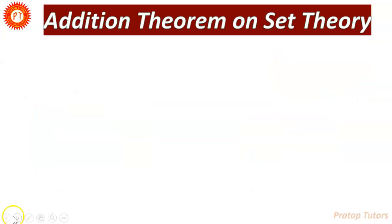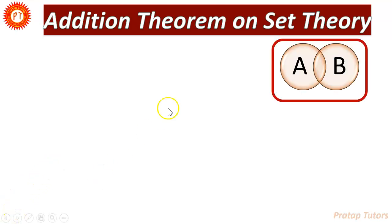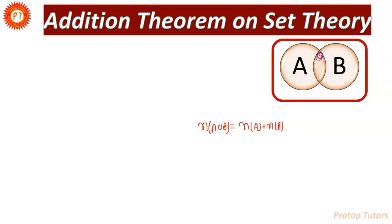Suppose that you have two non-empty sets A and B and you want to find the number of elements in A union B. This is equal to n(A) plus n(B), but here some parts are added twice. So we can simply subtract that part, which is A intersection B. So n(A∪B) = n(A) + n(B) - n(A∩B).